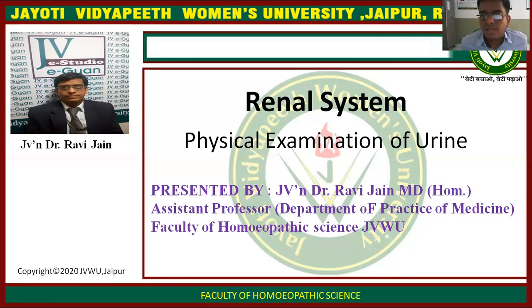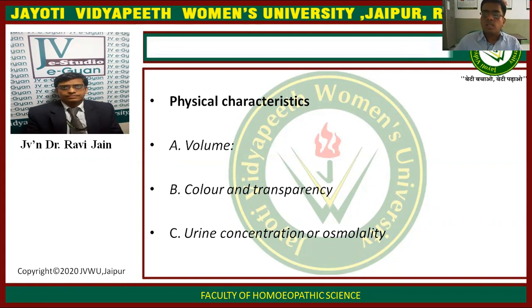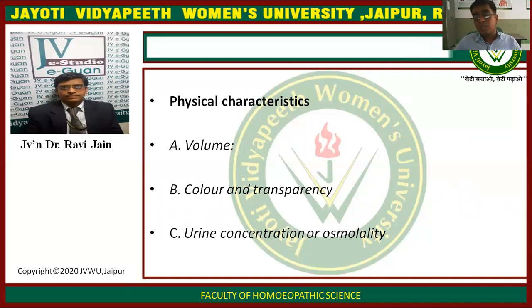What are the various things that we are going to observe in the physical examination of the urine? Let's see them one by one. There are various physical characteristics that need to be observed. First of all, we have to observe the volume of the urine that is passed. There are two methods of calculating the urine volume. Especially in case of renal disorders, we are calculating the urine for the whole 24 hours. So 24-hour urine collection is done, especially in case of renal failures, and the complete 24-hour urine volume is calculated.